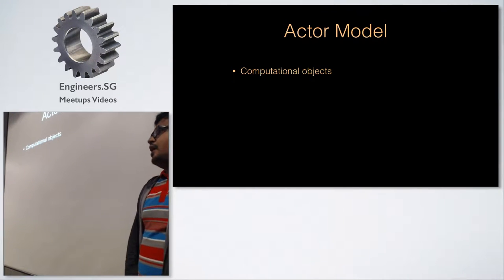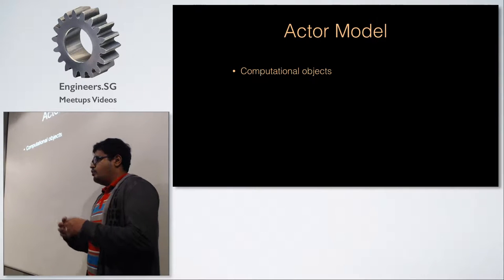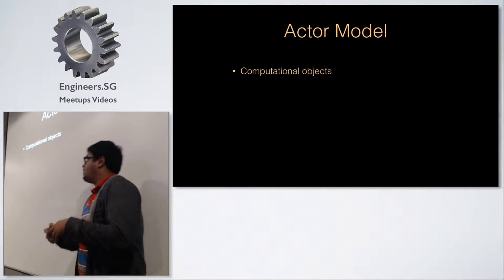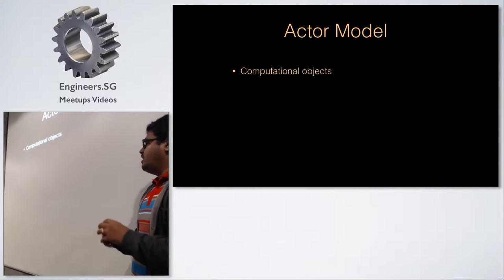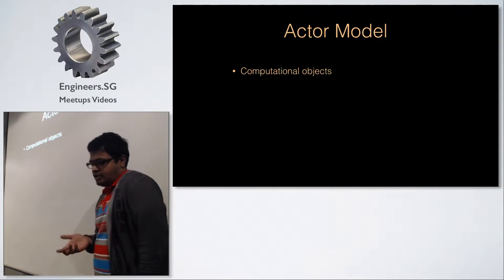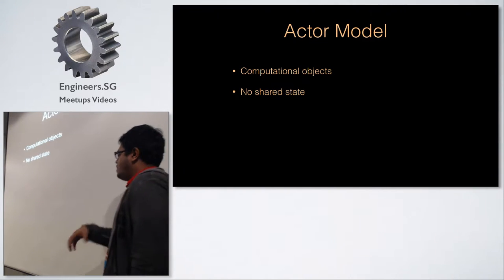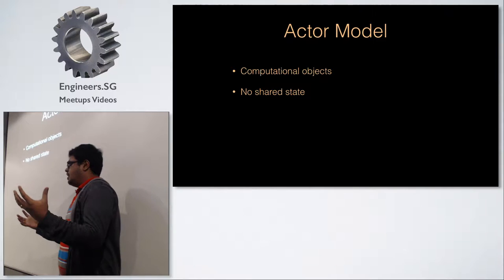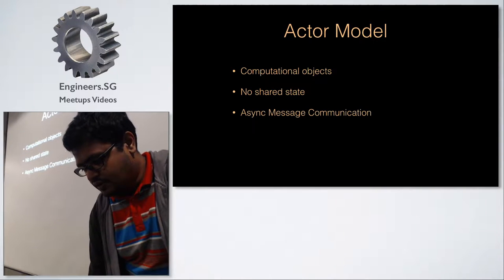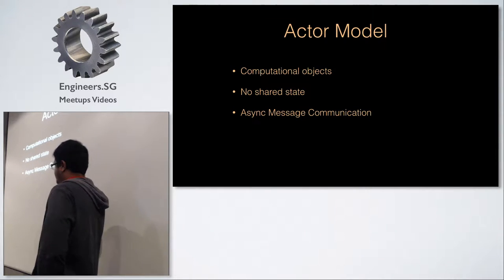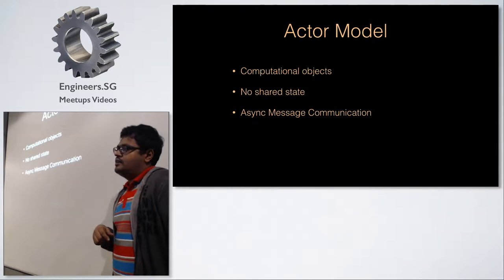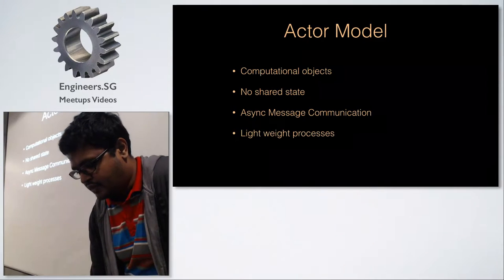The actor model is basically computational objects with no shared state. We want to avoid shared state without taking locks, so the state must live somewhere — it goes with some actors around it. Each computational object wraps around the state and performs all actions on it. Since each object is responsible for updating its own state, there's no shared state between two different objects. They communicate using asynchronous message passing — you send a message and get a reply back.